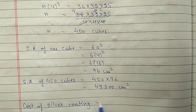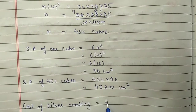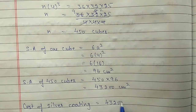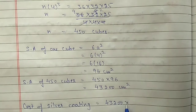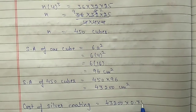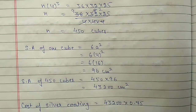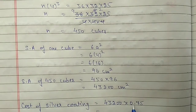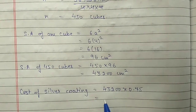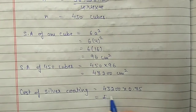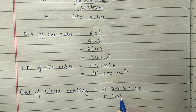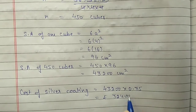Cost = surface area multiplied by rate = 43,200 into 0.75 rupees per cm², which gives 32,400 rupees.